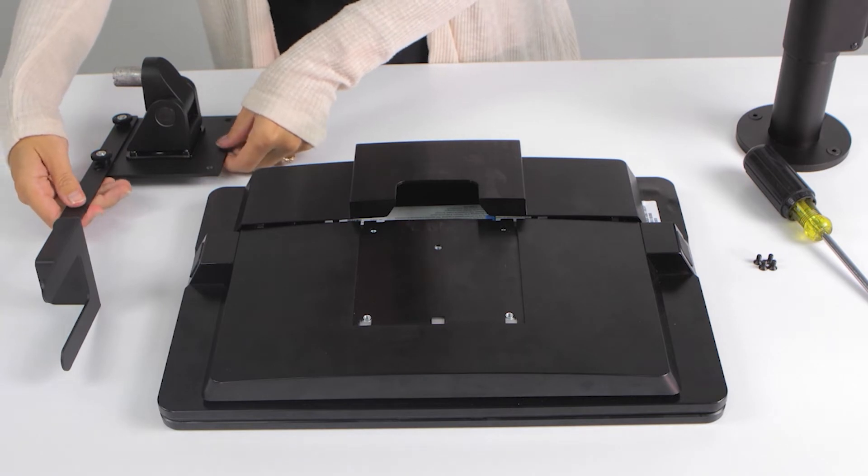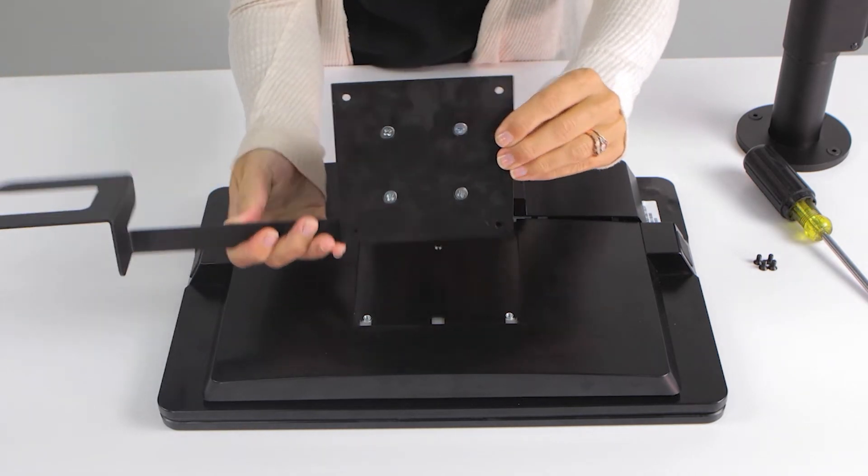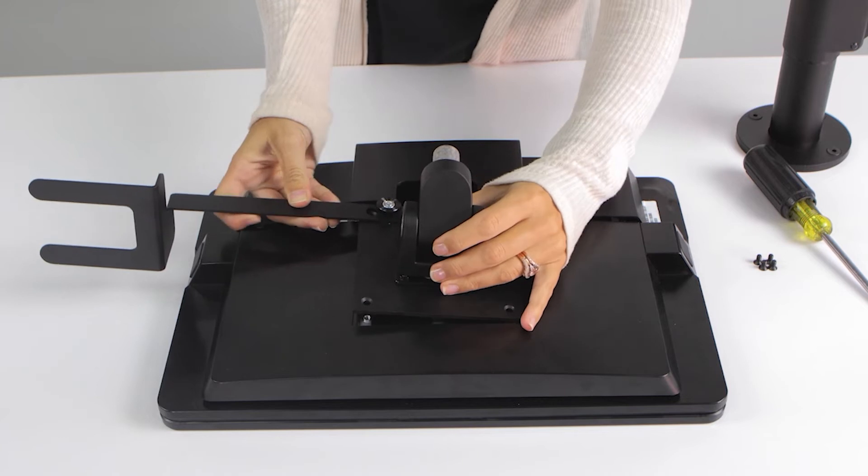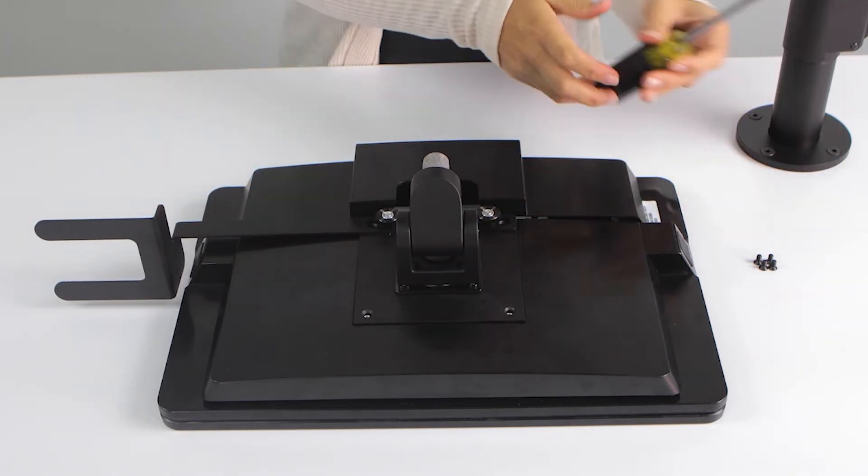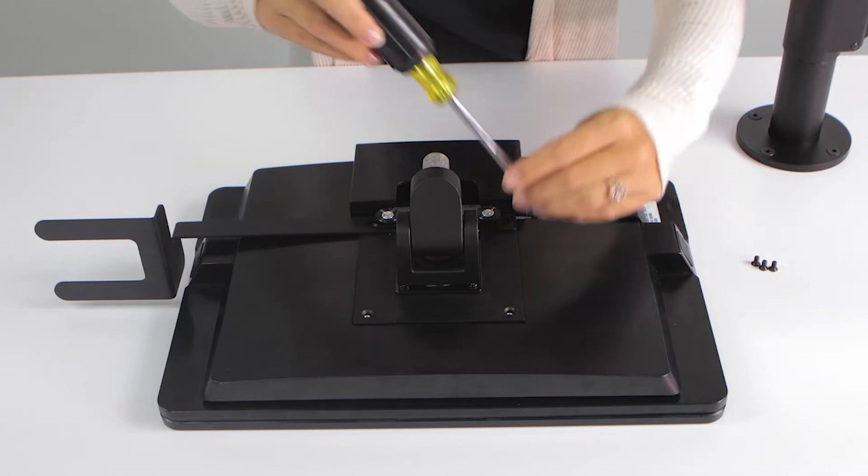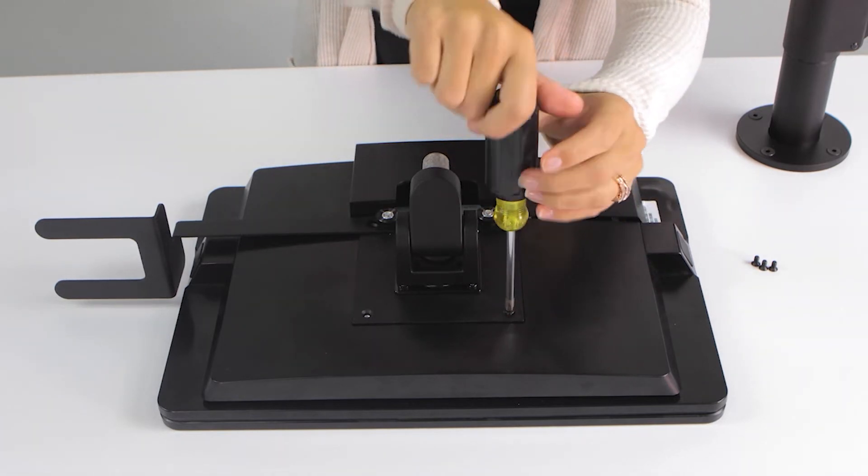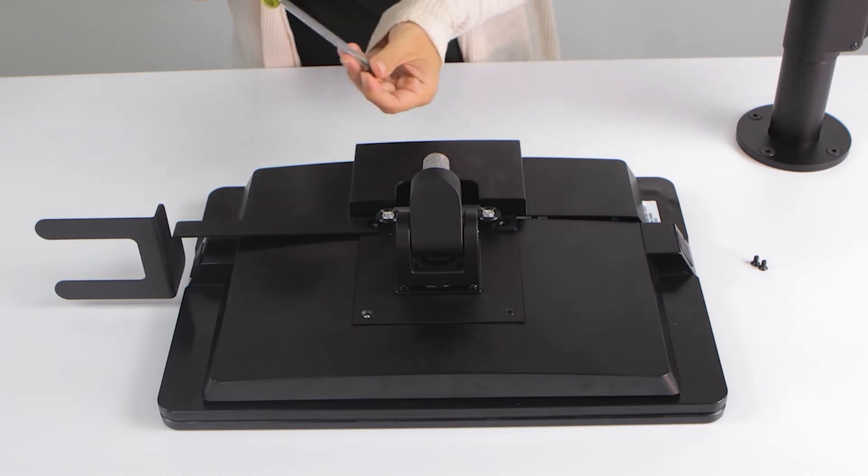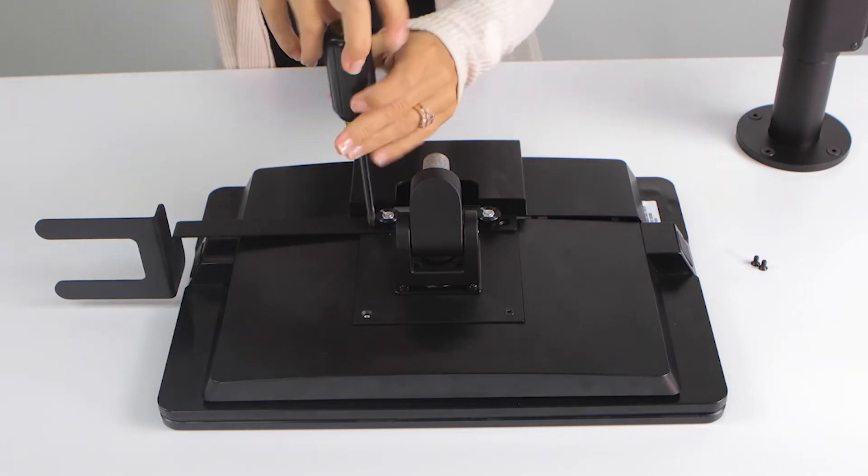Step 5. Attaching the monitor. Connect the Toshiba monitor to the tilter using the four M4.7 screws. Two screws will go through the upper corner holes of the VESA plate. The other two screws will go into the lower outer holes of the scanner bracket, followed by the monitor.